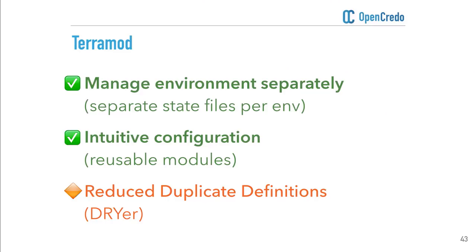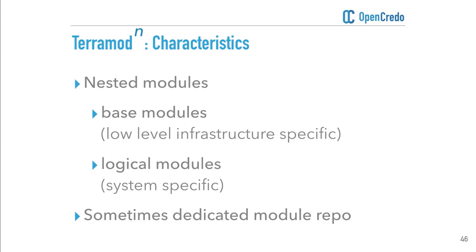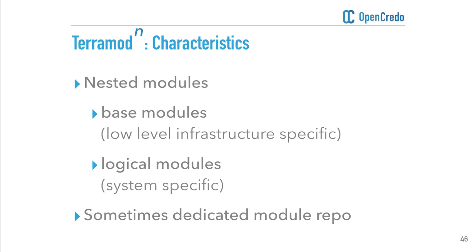We now need to move on to the next setup, which will allow us to further reduce duplication. We need to evolve our infrastructure again. This is what I call the Power TerraMod setup. It really builds on the TerraMod setup and takes the use of modules to a new level — you end up having nested modules, or modules within modules. The characteristics are that you have these nested modules in two different flavors: base modules, which are more low-level infrastructure-type setups, and logical or system-specific modules.